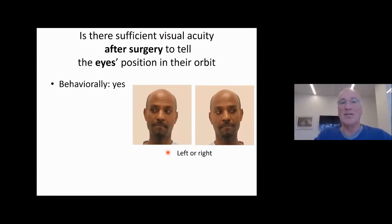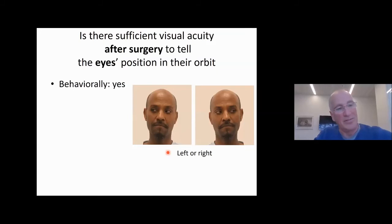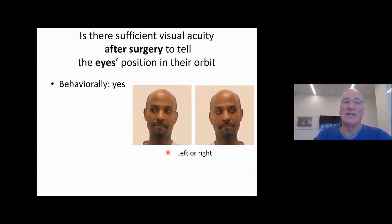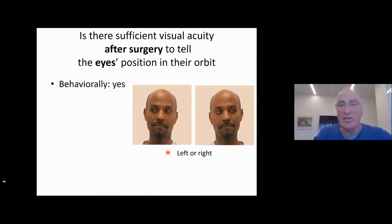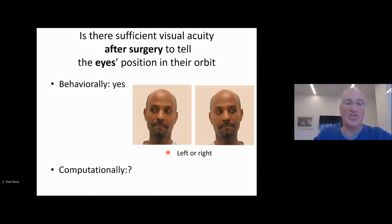The next question is whether there is sufficient visual acuity after surgery to tell the eyes' position in their orbit. Before surgery their visual precision is too poor, but we checked behaviorally and they are able to tell if the eyes are left or right of center. To remind you, this is a necessary but not sufficient condition to tell gaze direction. If you can't tell the eye position, you cannot tell gaze direction — but to tell gaze direction, you also have to convert this eye position into a position in space using a vector. So the next thing was to check whether computationally you can tell the eyes' position in their orbit given the blur after surgery.